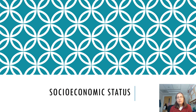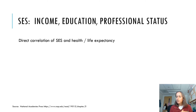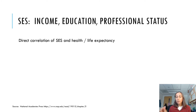When we look at different characteristics of individuals, socioeconomic status ends up being a really powerful predictor of someone's overall health and wellness. When we talk about socioeconomic status, we're referring to basically three variables combined: your income levels — how much money you have — your education level, which is different although often related, and your professional status — how much status and social standing you have in your community and workplace. What we see is a direct correlation: the higher your socioeconomic status, the higher your life expectancy.